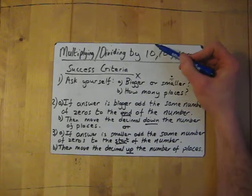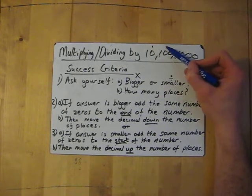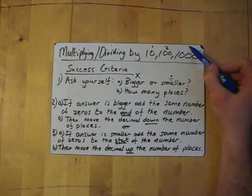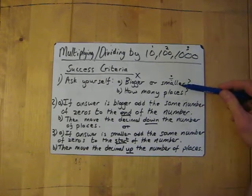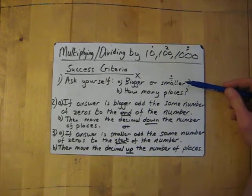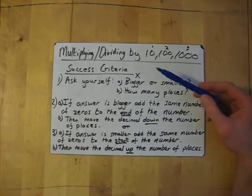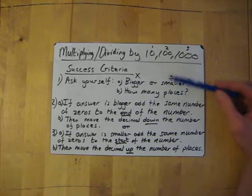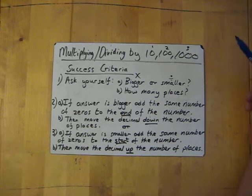So 10 would be 1 place, 100 would be 2 places because it's got 2 zeros, and 1,000 would be 3. That's how you get the answers to these questions. Look at the question, think bigger or smaller — multiply is bigger, divide is smaller — and how many places is how many zeros there are.